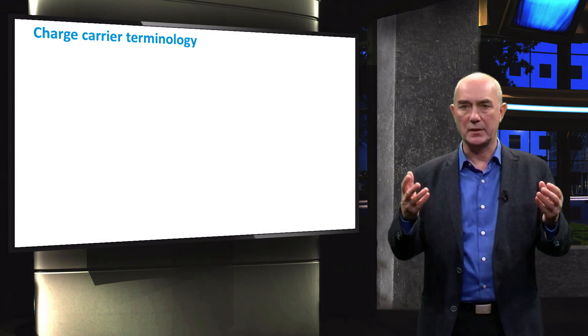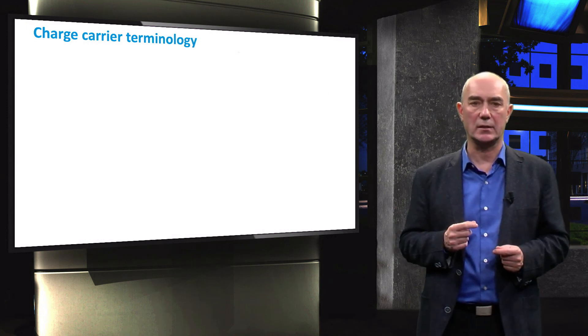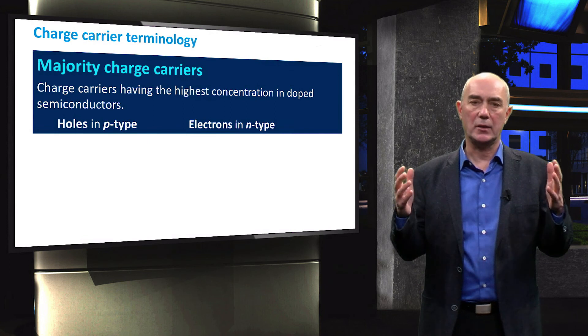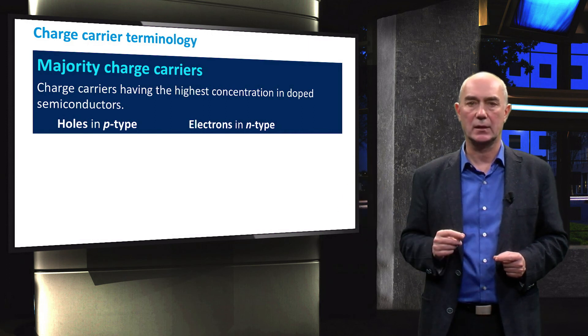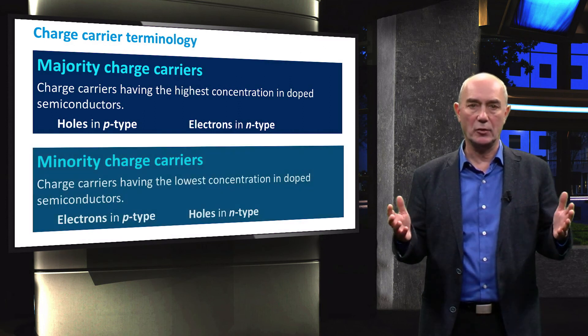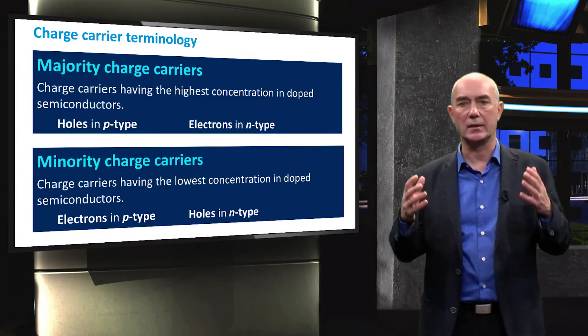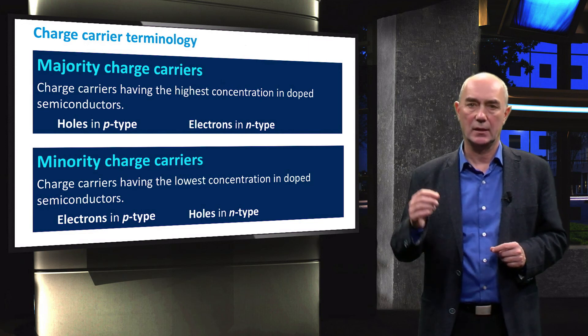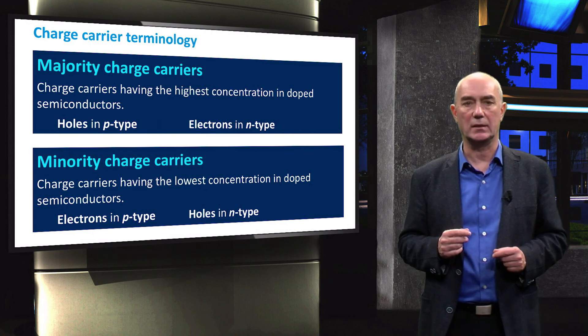However, with doping we manipulate the concentration of only one type of the charge carriers. We call the carriers whose concentration is much larger than that of the other type majority carriers. These are holes in p-type materials and electrons in n-type materials. Minority charge carriers are the carriers with much lower concentration than the majority carriers. These are electrons in p-type materials and holes in n-type materials.